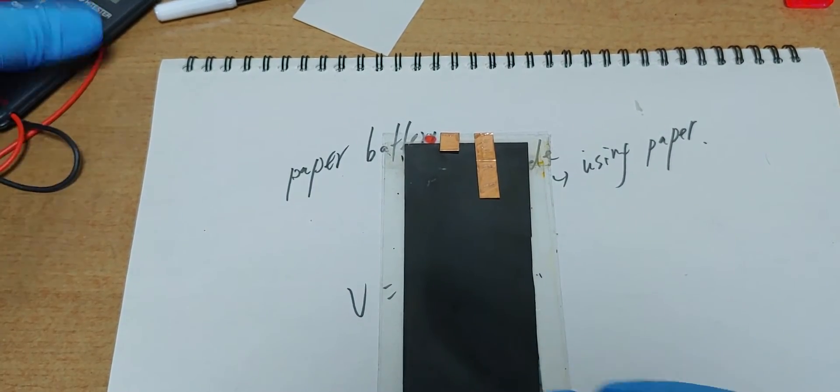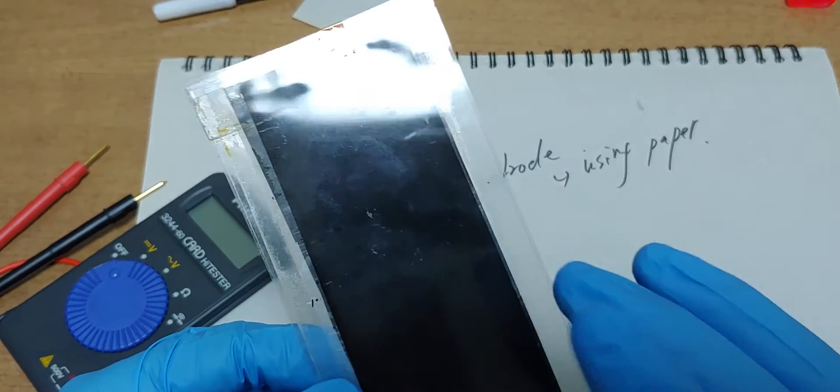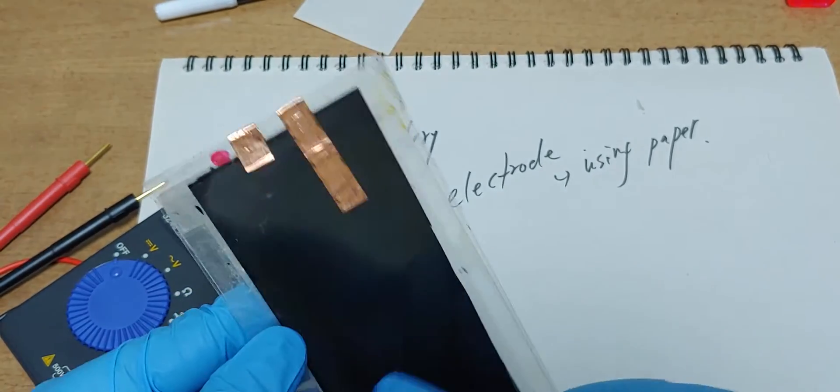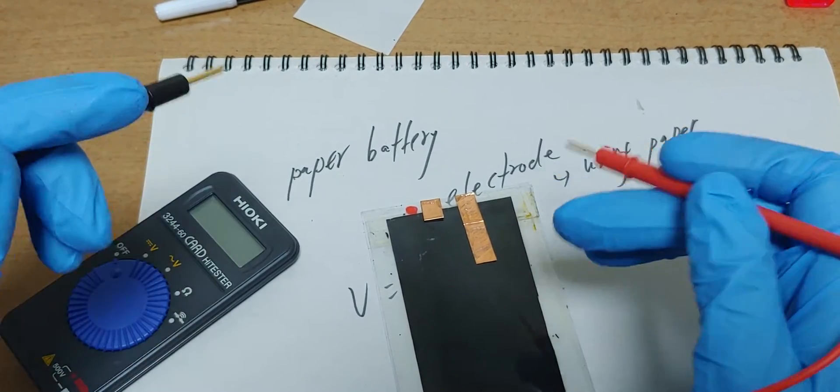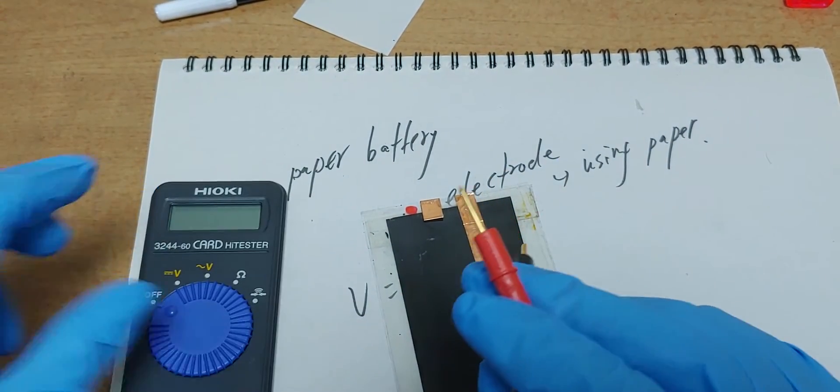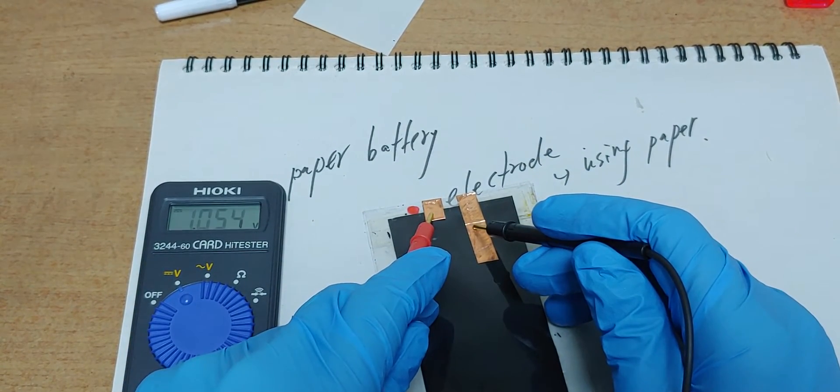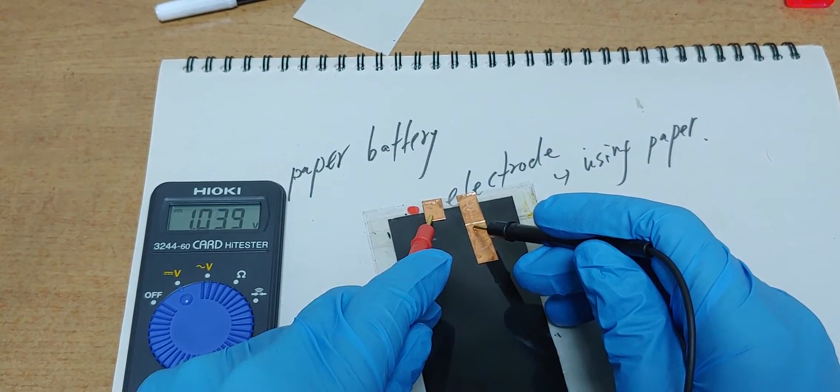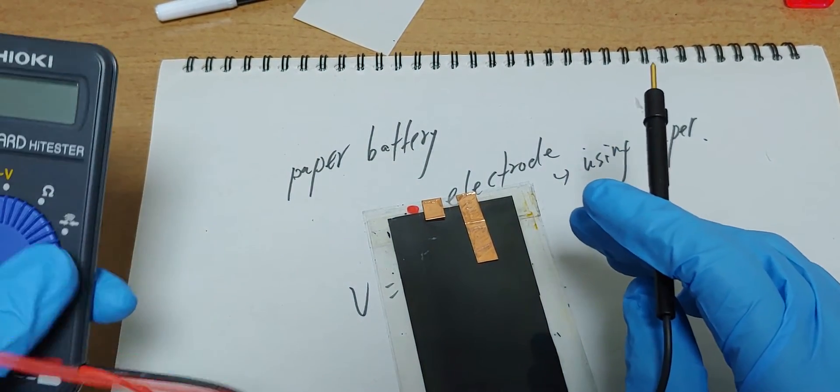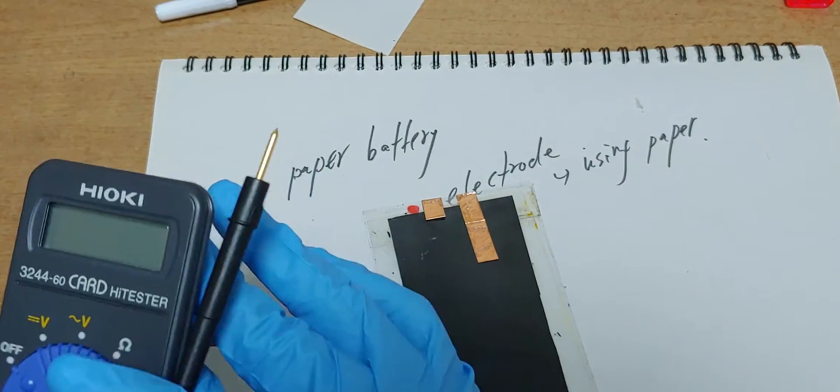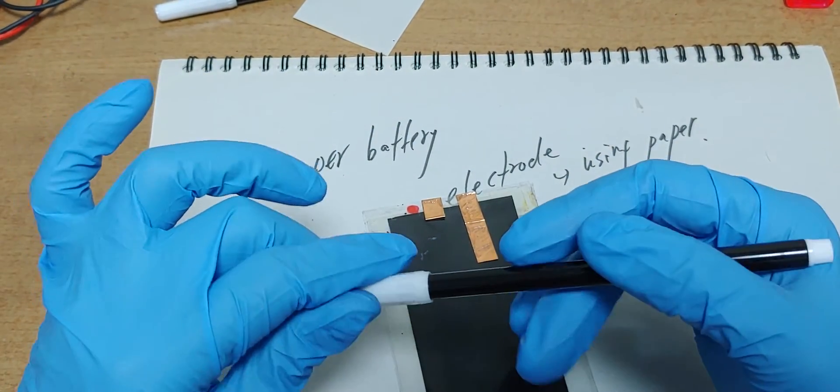This is the battery. One side is graphene and the other side is graphene too. So there is no electric potential energy, but it shows one volt. Maybe if I charge it more, it will show maybe 1.3 or 1.5.